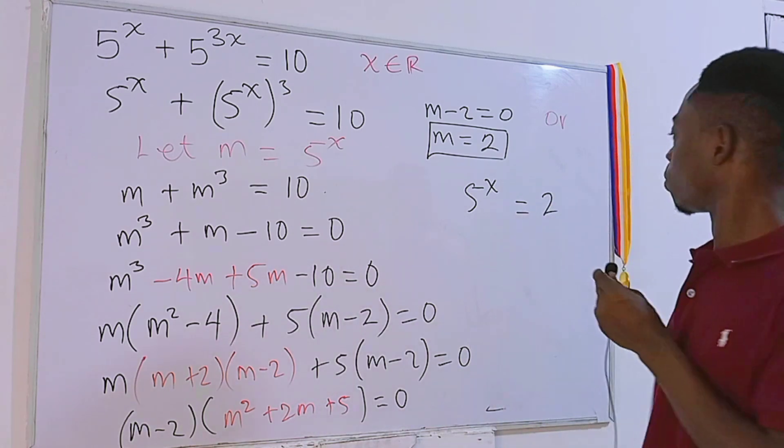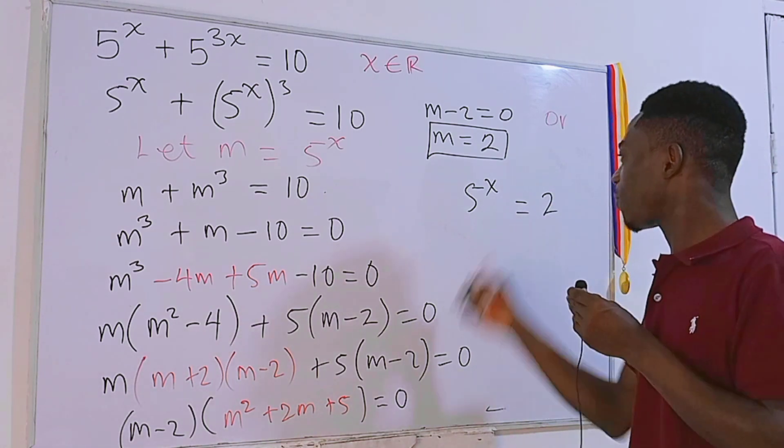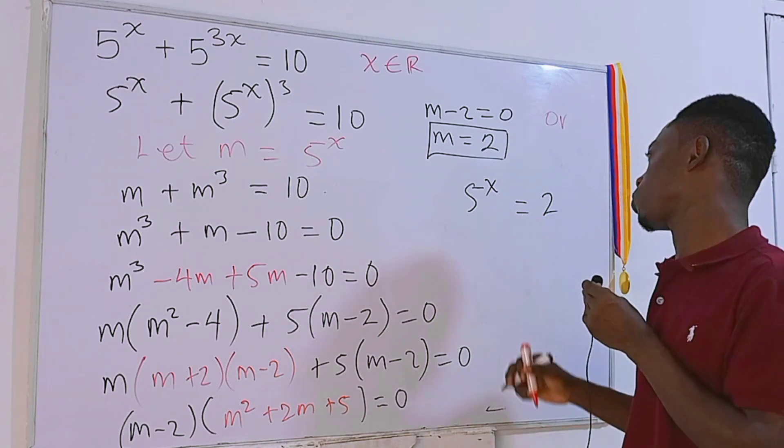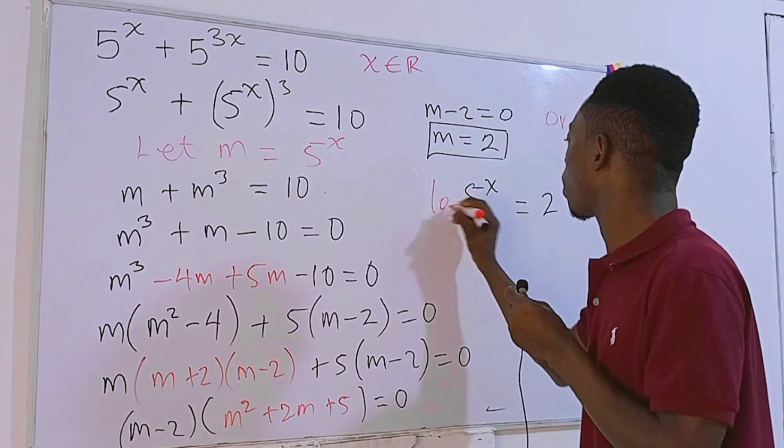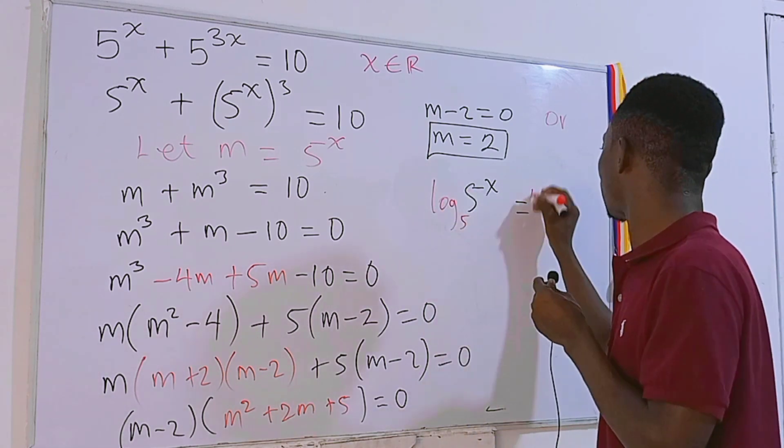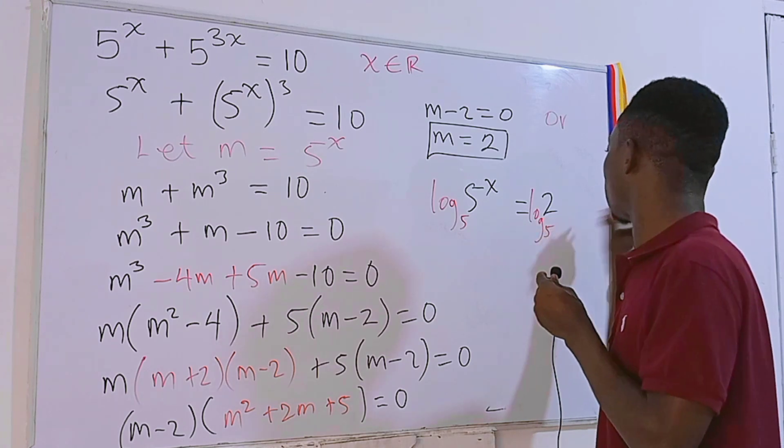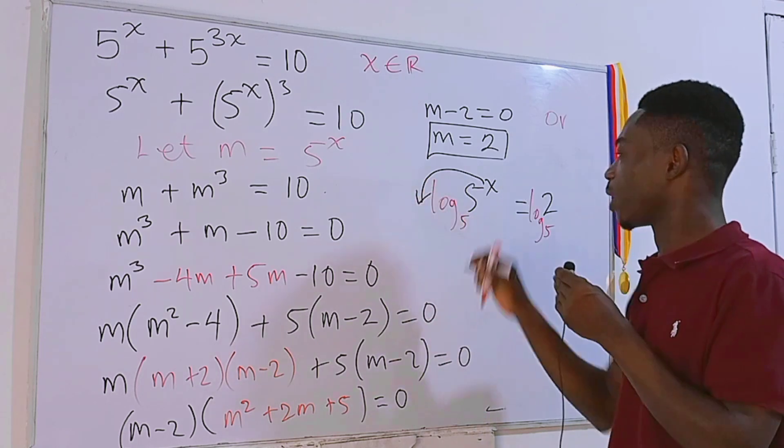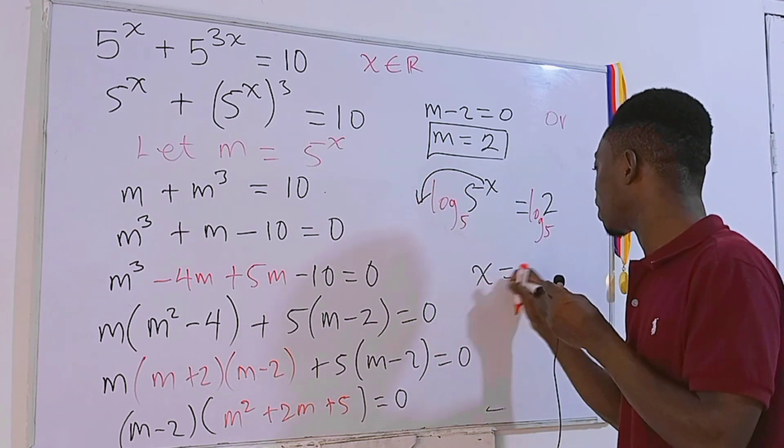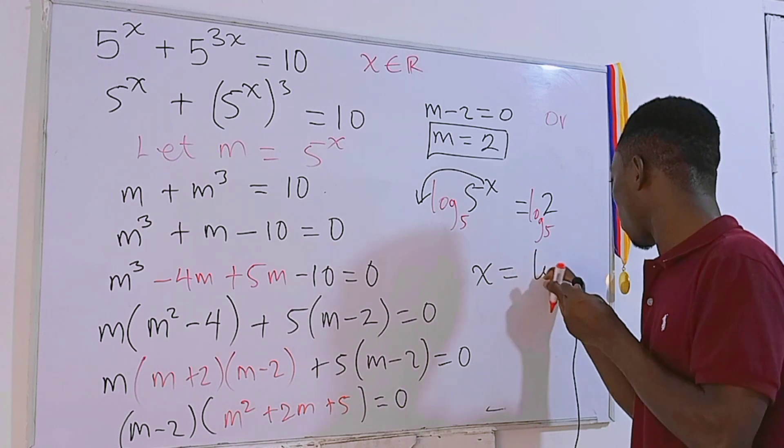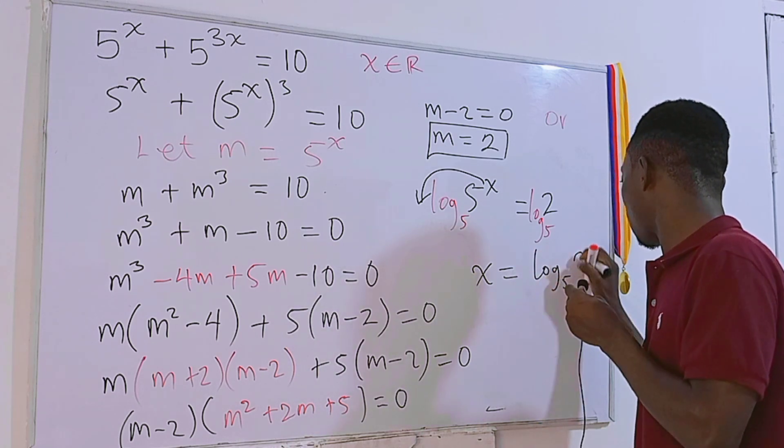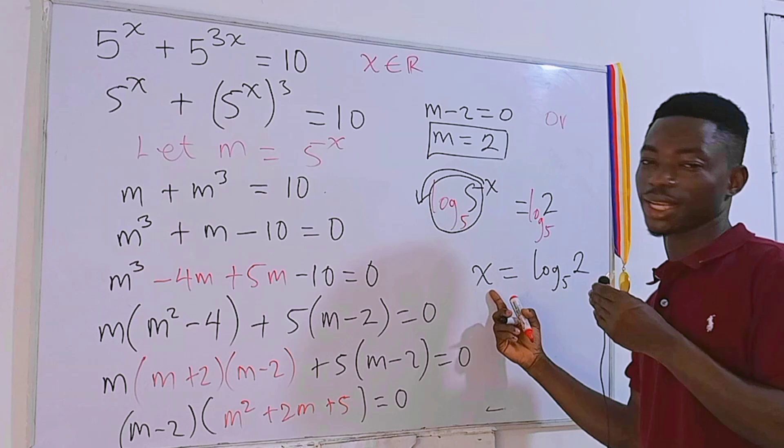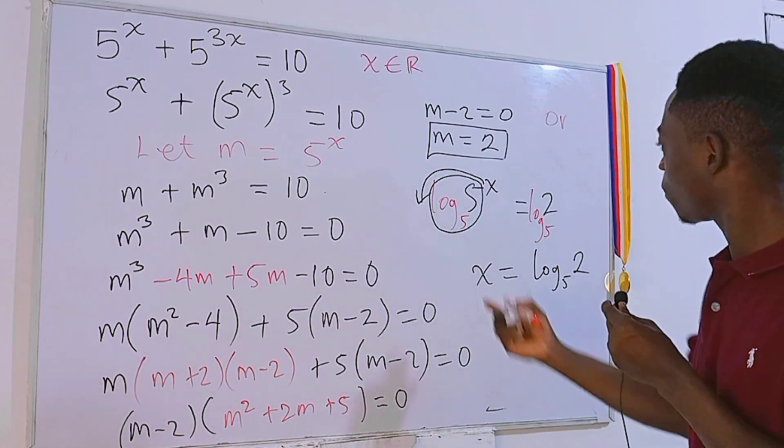So when you get m, that m is equal to this equation, so we are going to have 5^x = 2. Pretty interesting. Now this equation is also an exponential equation, but the easiest approach to solve this is to take log in base 5 on each side of the equation. And as soon as we do this, because the power will come to the front here, we have x = log base 5 of 2.